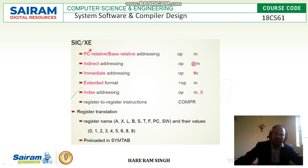Remember: operand followed by '#' is immediate addressing; operand followed by '@' is indirect addressing. The register names we have already studied are: A, X, L, B, S, F, and SW. Their access symbols are 0, 1, 2, 3, 4, 5, 6, 7, 8, 9.